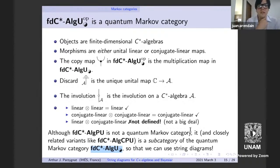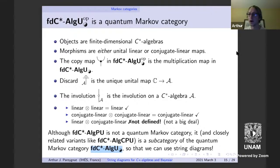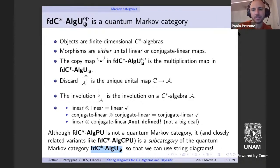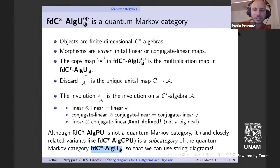Paolo has a question: do you have any idea how it could work with multi-categories? How would a Markov multi-category look — what plays the role of the copy map, and how can you say something is deterministic?